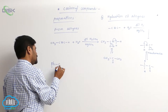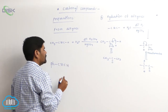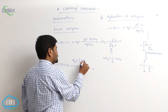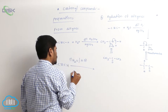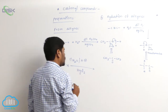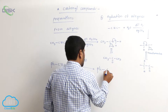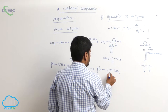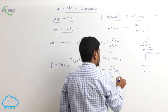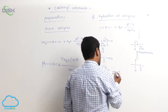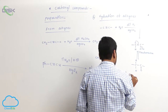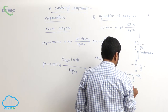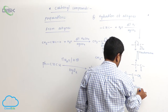When phenylacetylene (PhC≡CH) reacts with water in the presence of hydrochloric acid and mercury chloride as a catalyst, it first forms an enol Ph-C(OH)=CH₂. This enol undergoes tautomerization to give the ketone Ph-C(=O)-CH₃, known as acetophenone.